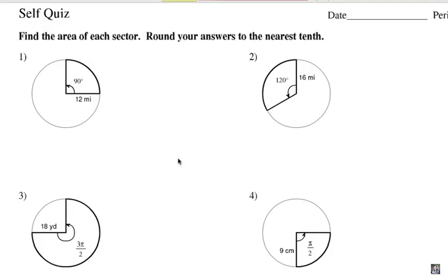I'm going to present to you 4 examples here. These first 2 have the central angle in degrees. These numbers 3 and 4 have the central angle in radians, as you can see here. Pause the video and give it a try.